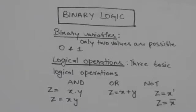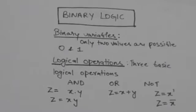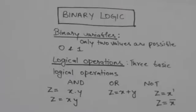Hello friends, welcome back to the tutorials. In this tutorial we will learn about binary variables and the basic logical operations which can be performed on binary variables. Binary variables are those variables whose values can either be 0 or 1. There are only two possible values for binary variables, that is 0 and 1.